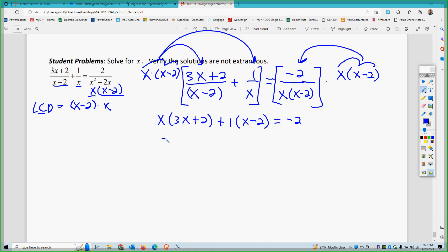If I distribute, I get 3x squared plus 2x plus 1x minus 2 equals negative 2. I clearly have multiple powers of x here, so I have to use factoring strategy.